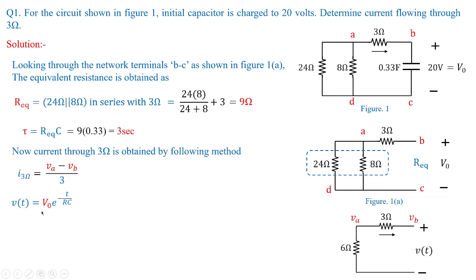V(t) is equal to V0 times e to the power of minus t divided by tau, that is RC. Substituting values: V0 is 20 volts, and the time constant is 3 seconds, so Vb equals 20 e to the power of minus 0.33t. This is the node voltage Vb.